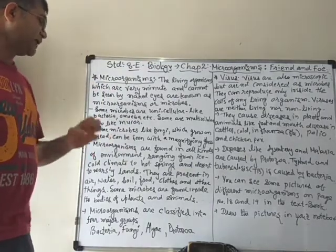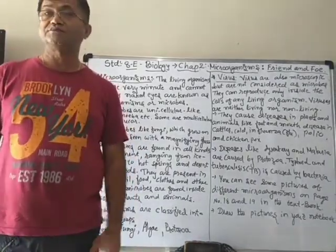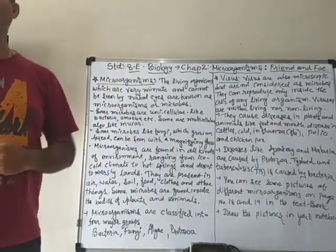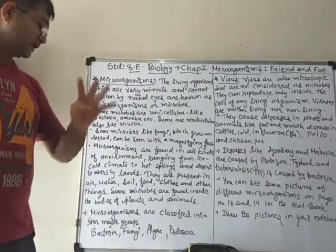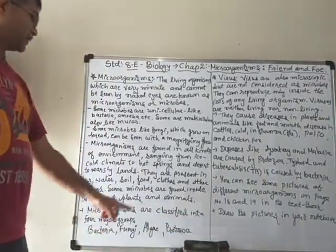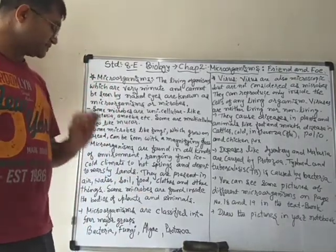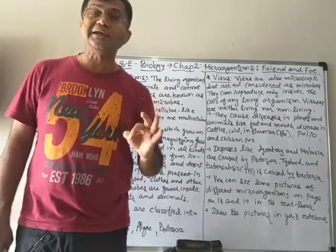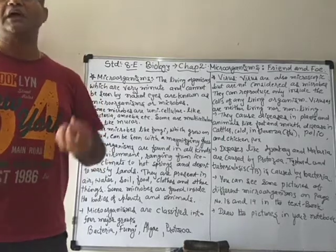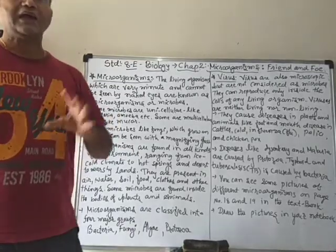Now, these micro-organisms are classified into four major groups according to their body design. The four major groups are: bacteria, fungi, algae, and protozoa.